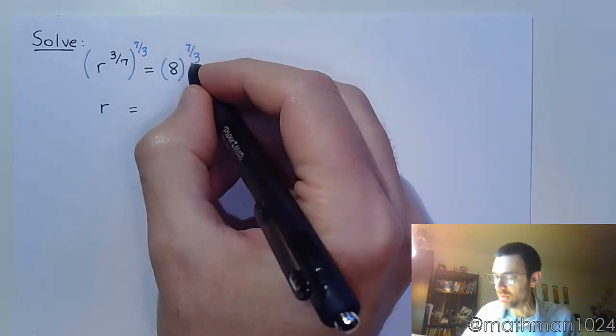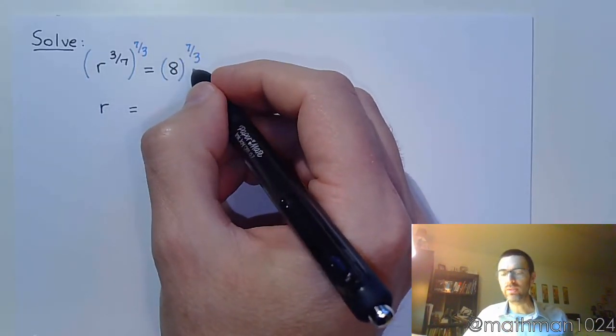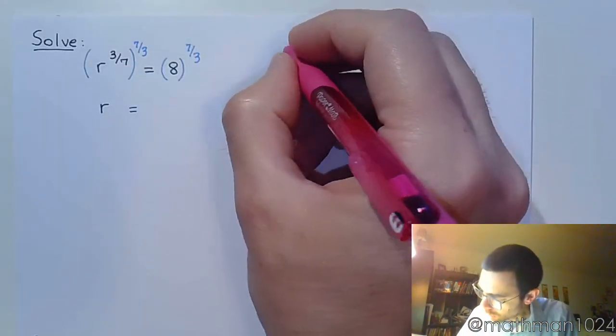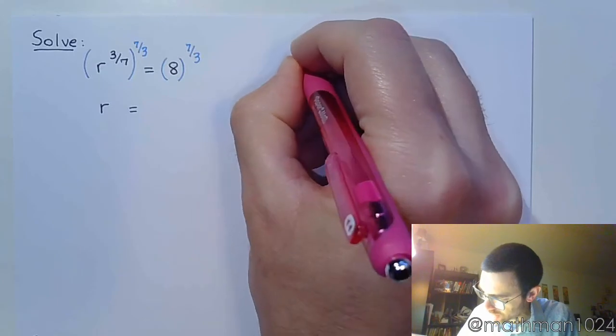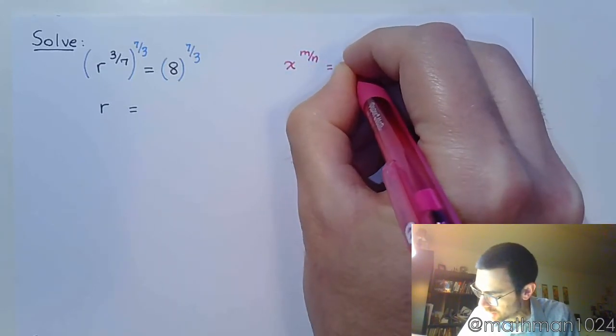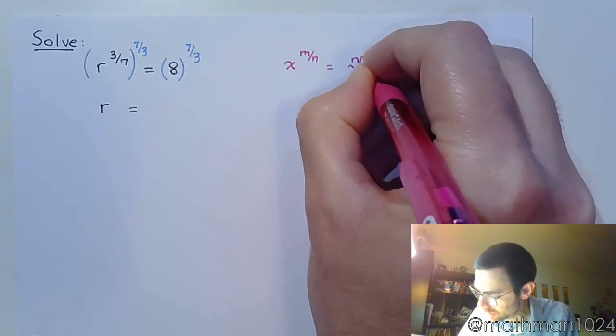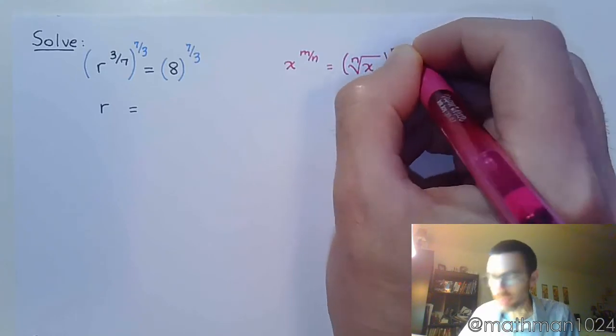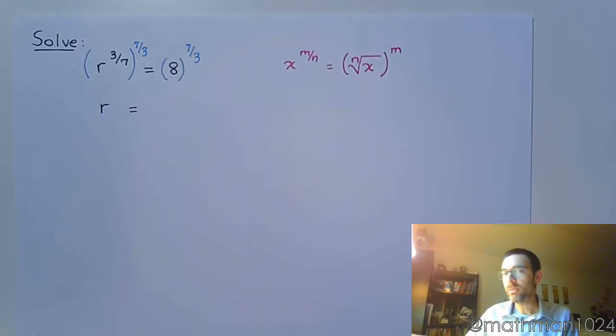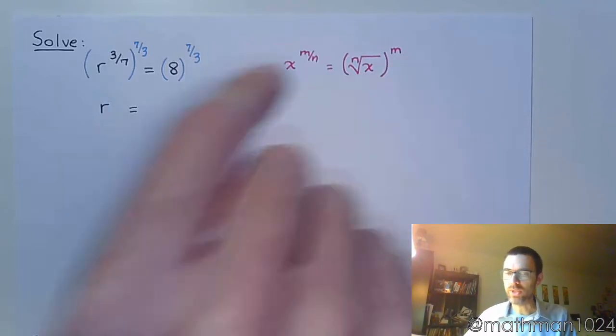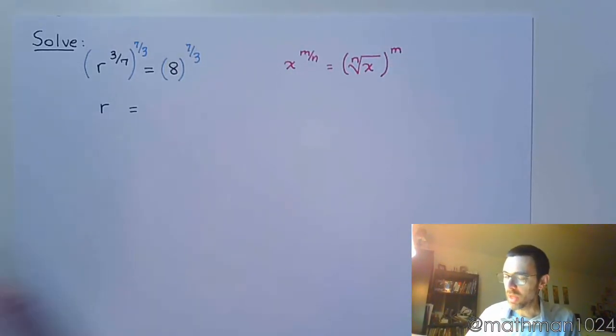Over here, I've got to remember how to deal with rational powers. When we have something that looks like x to the m over n, that denominator becomes the index of my radical, and the numerator of the power is just the power of that expression. Typically it's easier to go to the root first and then apply the power - saves us a lot of heartache.